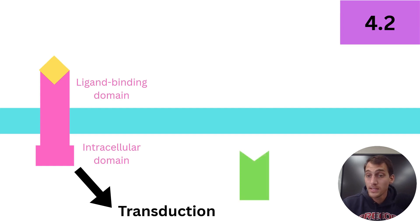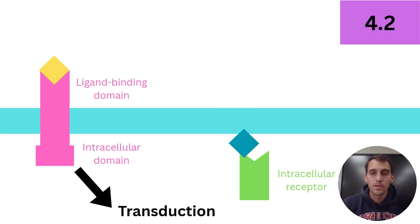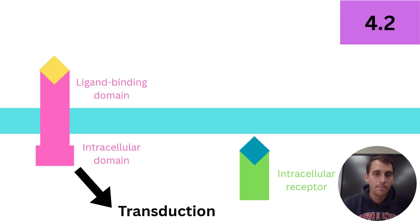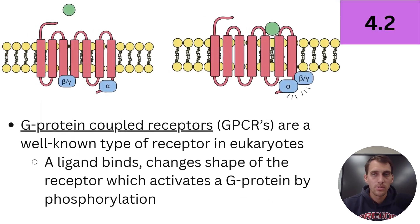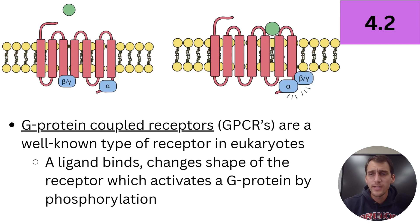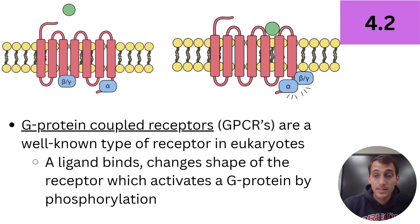Some receptor proteins are not on the plasma membrane — they're not on the surface of the cell; they are inside the cell, hence intracellular. Some ligands are able to pass through the membrane and can cause signal transduction pathways as well. These intracellular receptors are most commonly associated with gene expression — using a gene, DNA, to make a protein. We spend a whole unit on it; that's what unit six is about.